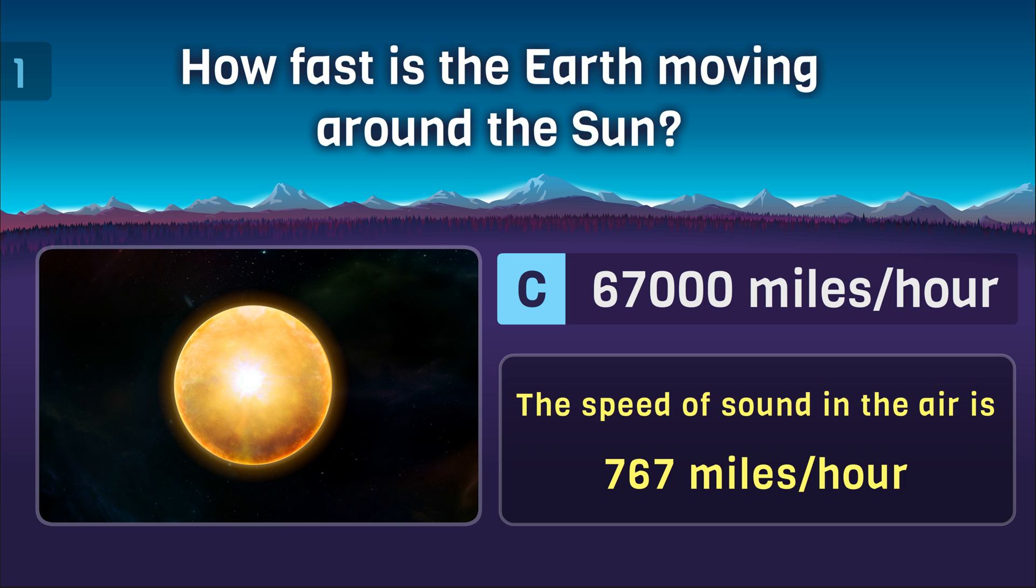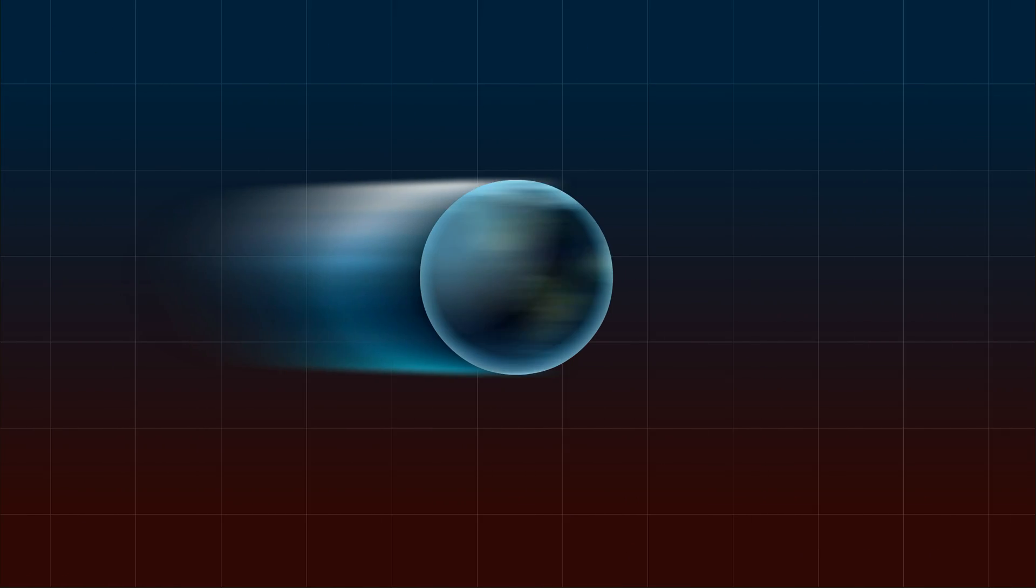The speed of sound in the air is 767 miles per hour, so the Earth in her orbit is 87 times faster than the speed of sound in the air. We don't feel this extreme speed because the Earth moves at a near constant speed. She doesn't make any noticeable change which we can comprehend.